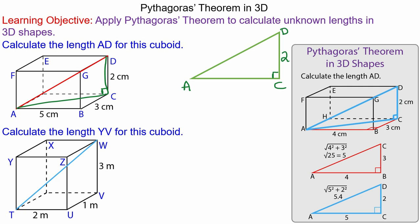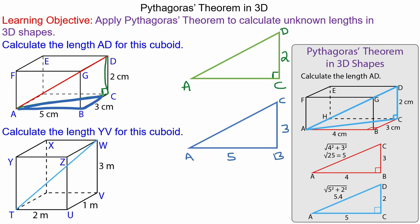The problem is we need to know another length of the triangle, so we're going to use another triangle A to B to C to find the length A to C. We can label the vertices of this triangle A, B, and C. We know A to B is 5 and B to C is the right angle, so we can calculate the hypotenuse.